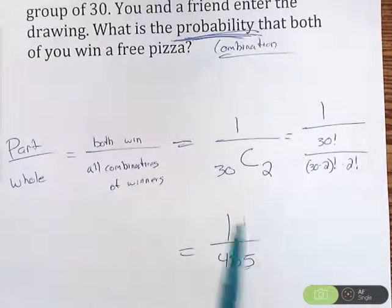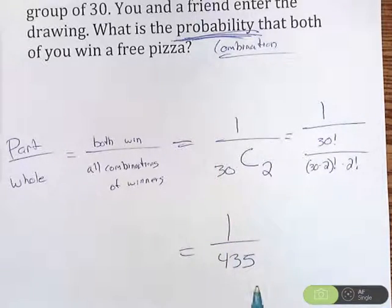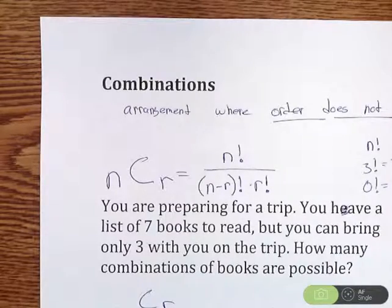So what is the probability that both you and you win a free pizza? It happens 1 in 435 is the probability there. And that was combinations as it relates to probability.